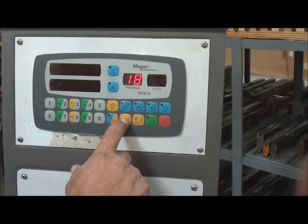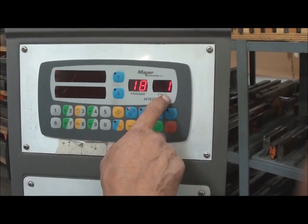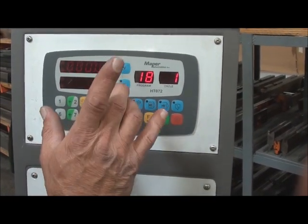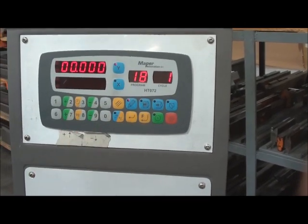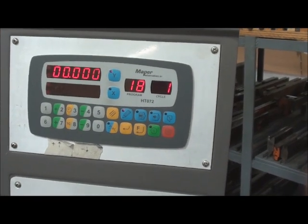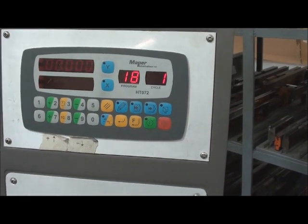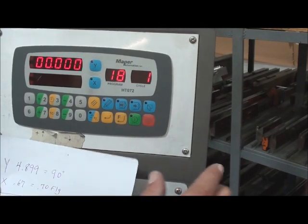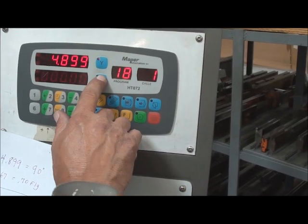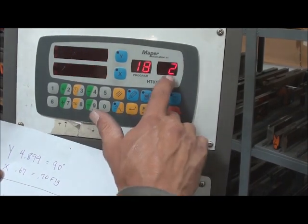So hit enter, and it'll go to the second one. At that point, you go wide for whatever depth you had. I think I'll go back to it. Go ahead, 4, 8, 9, 9, X, 6, 7, 8, enter, and then I'll go to cycle 2.